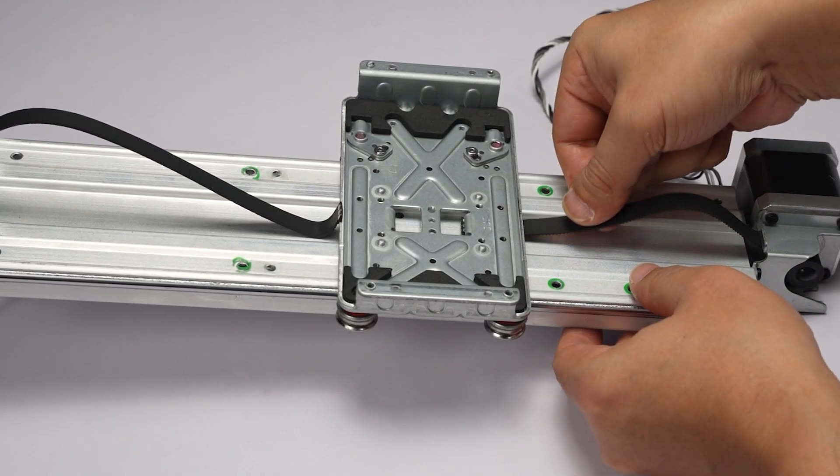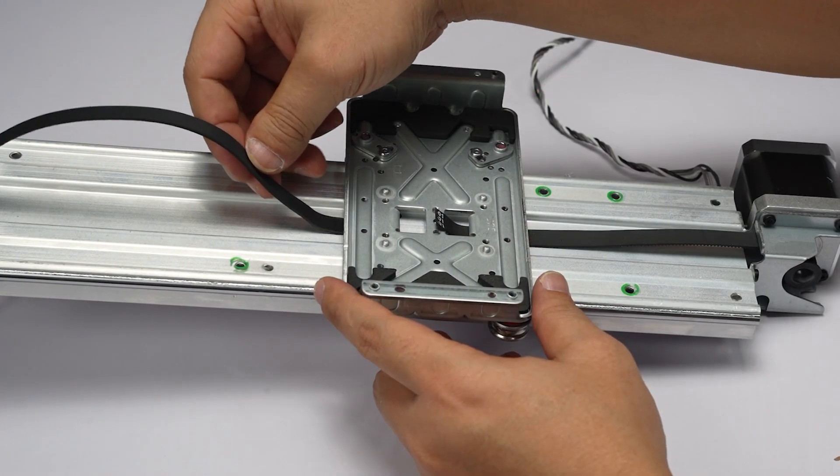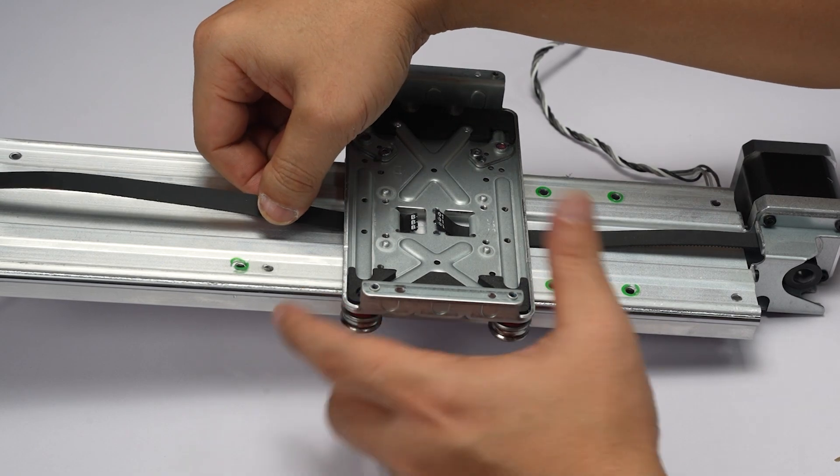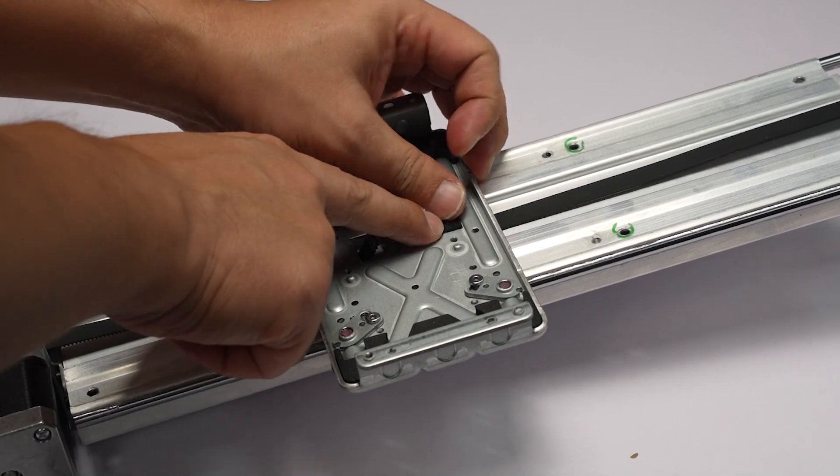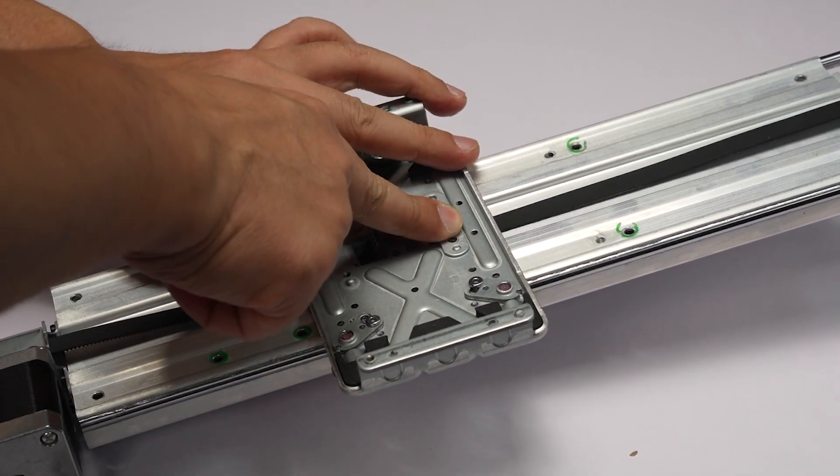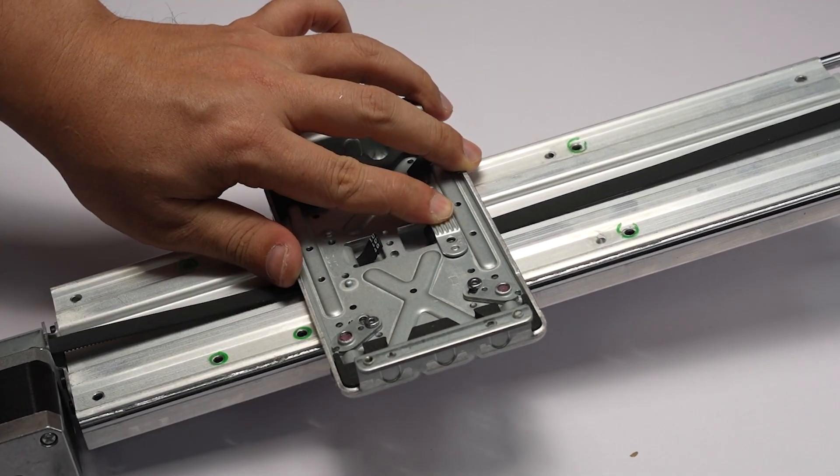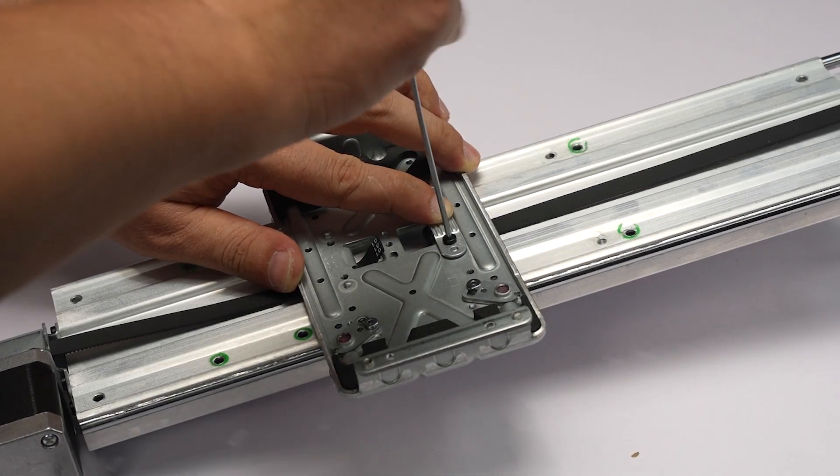Connect both ends of the Y belt to the heat bed bracket. Install the fixing plate and lock in two screws on each plate to secure them.